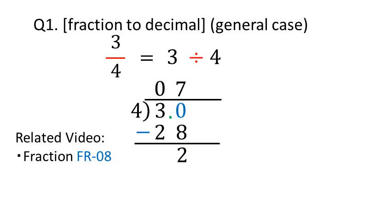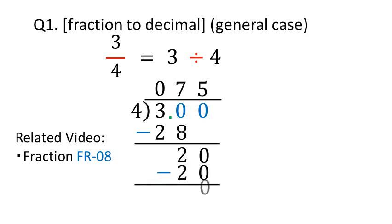Now there is no digit in hundredths, so we can place a 0 and move the 0 down. We now have 20. How many 4s can fit into 20? There are 5 fours in 20. 4 times 5 is 20. Subtract 20 from 20, which is 0. Now the decimal point just moves up. So the answer is 0.75.